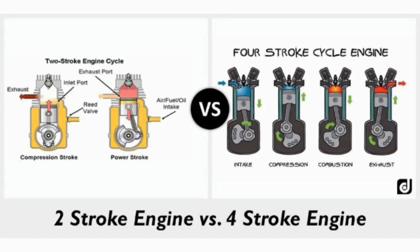Main difference between two-stroke versus four-stroke engines. In simple words, a stroke is the distance a piston moves inside the cylinder. If a piston moves two times in the cylinder, the engine is known as a two-stroke engine, and if it moves four times, it is a four-stroke engine.